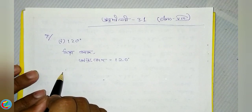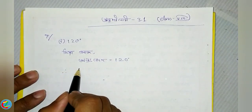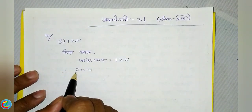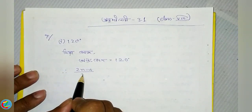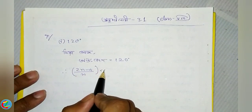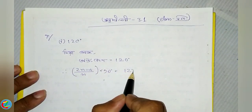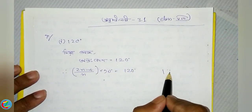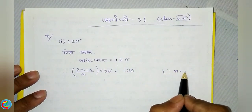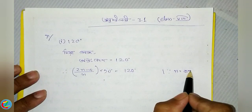We will be able to see more information. We want to give you the value of 2 and minus 4 divided by n into 90. We want to give you the value of 120 and n is equal to 2.